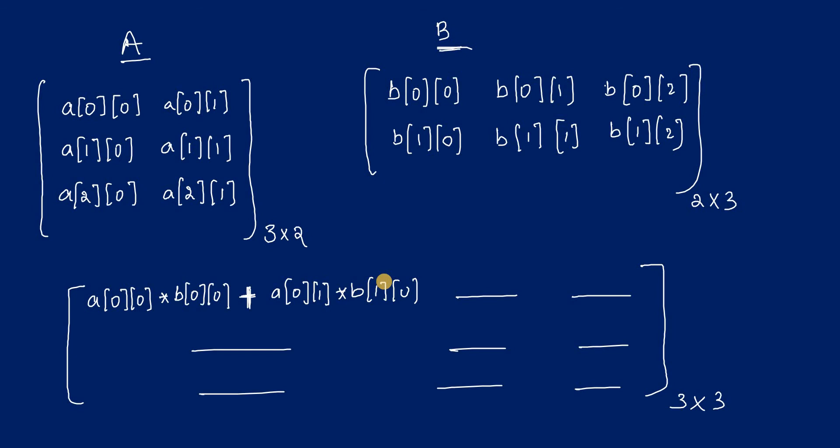Before writing the program, we will see how multiplication can be performed. Let us take two matrices: first one is matrix A of the order 3 by 2, 3 rows and 2 columns. Another matrix B with 2 rows and 3 columns. First of all, for the matrix multiplication to be possible, what is the condition?